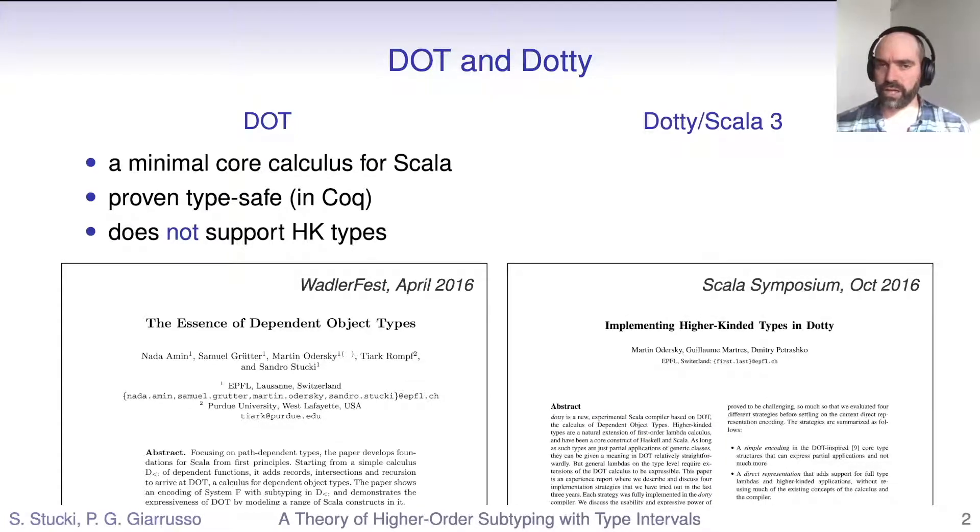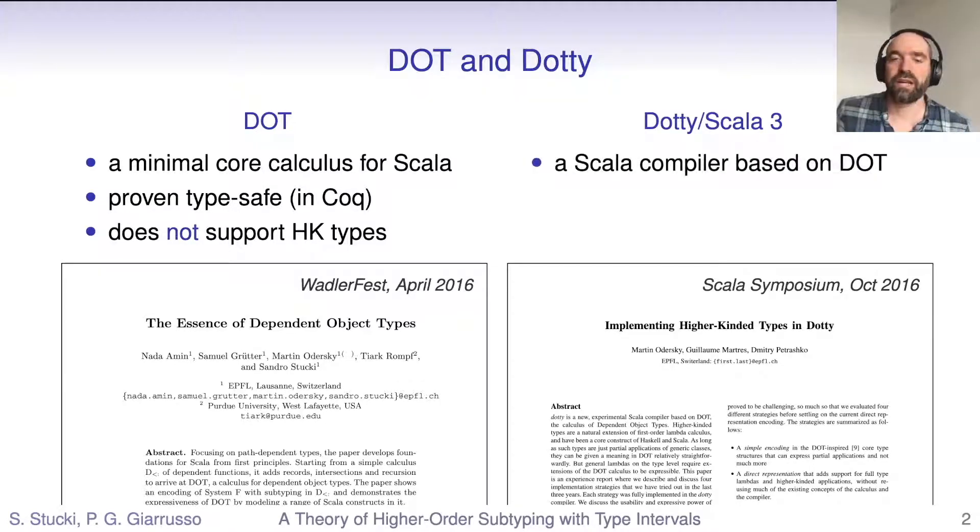Dot wasn't just a theoretical project. It was actually the foundation of a new compiler that Martin had been working on for a few years, called Dottie, and that has now become the Scala 3 compiler. Dottie is a full-fledged Scala compiler, and so it really needs to support all of the features of Scala. And there's no such thing as a type safety proof for Dottie. But under the hood, it still uses a lot of the ideas of Dot.